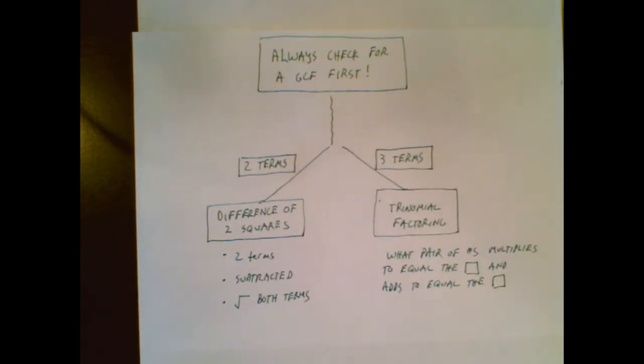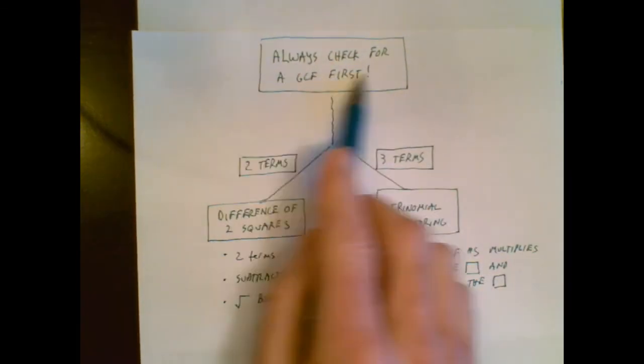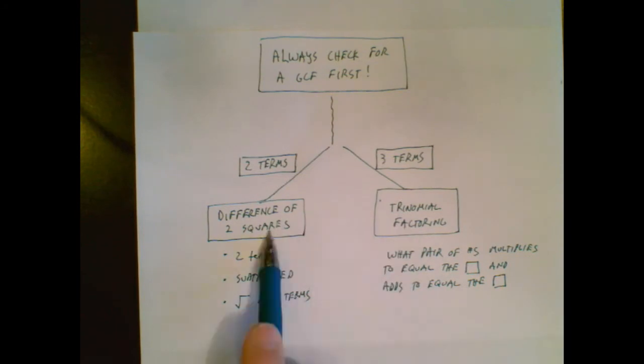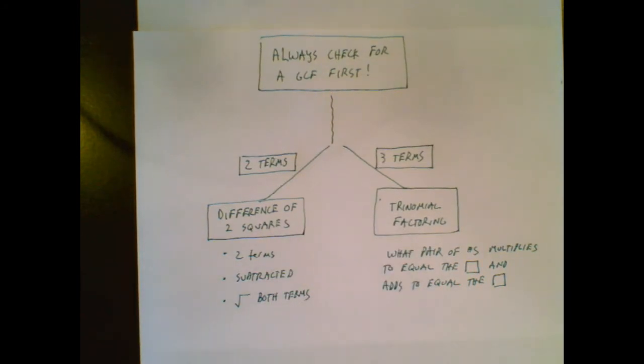So what you're doing in any factoring problem is always check for the GCF first. That's your first move no matter what. From there, you can see if you have other factoring available.